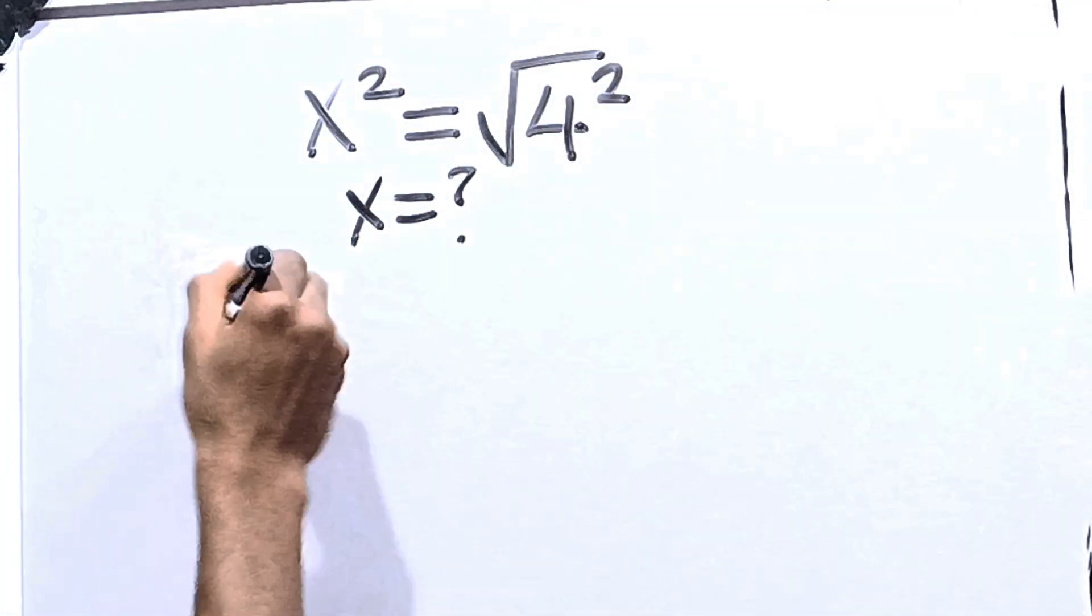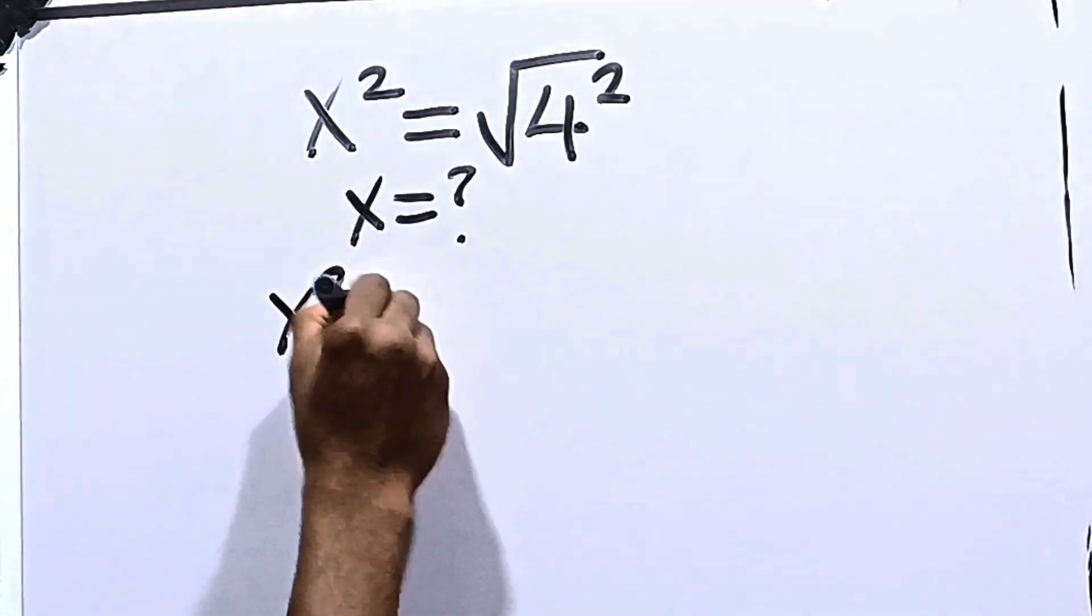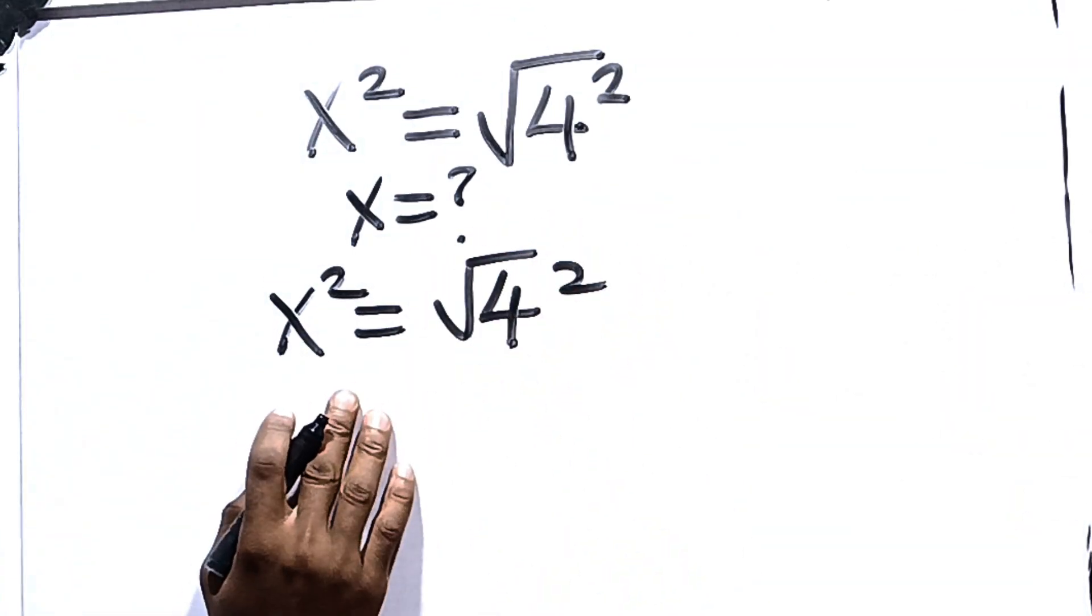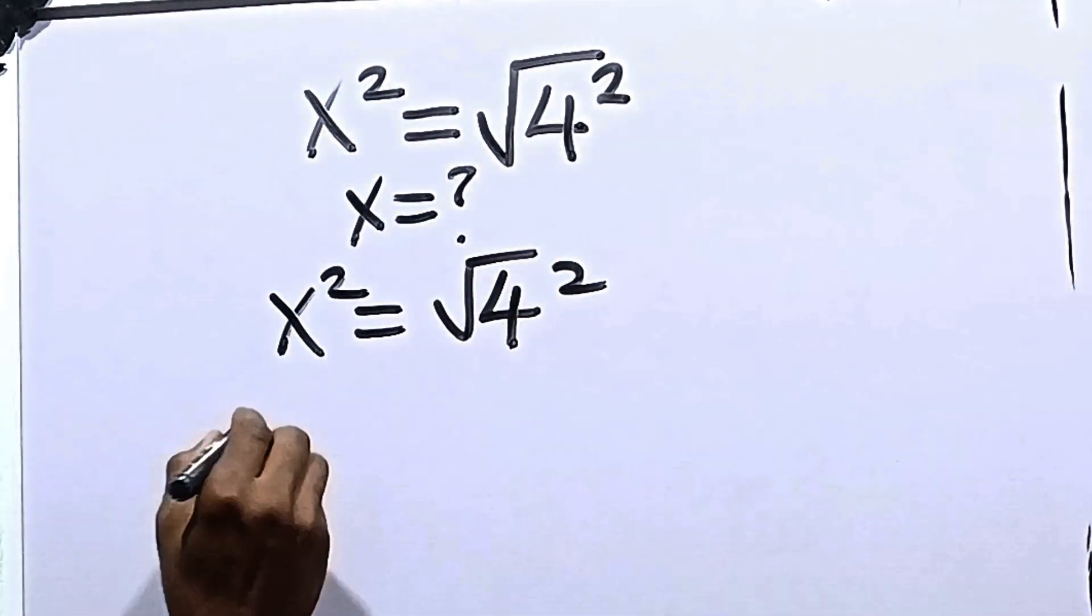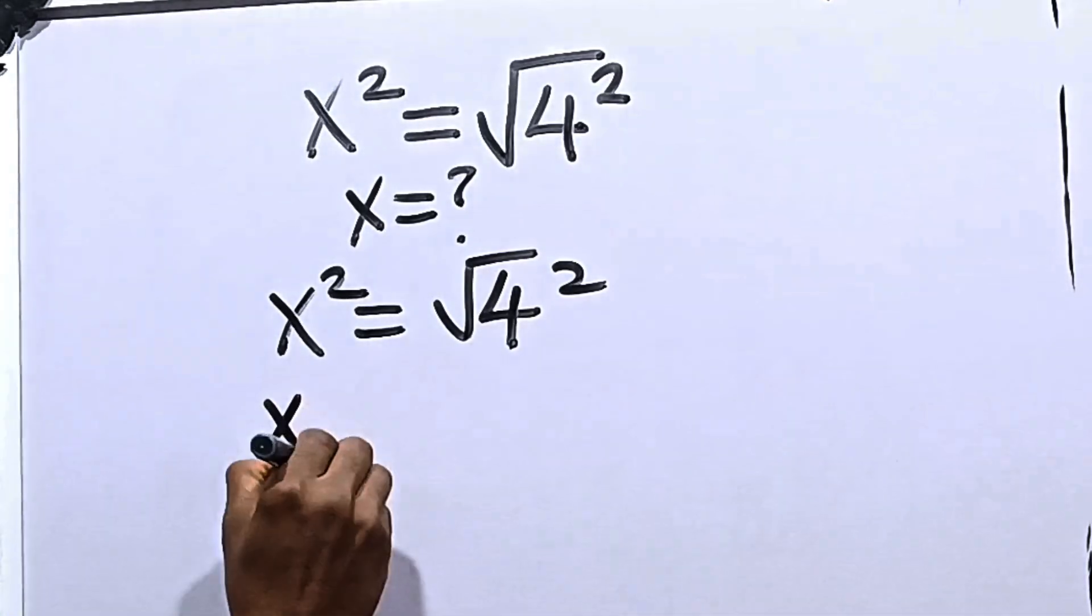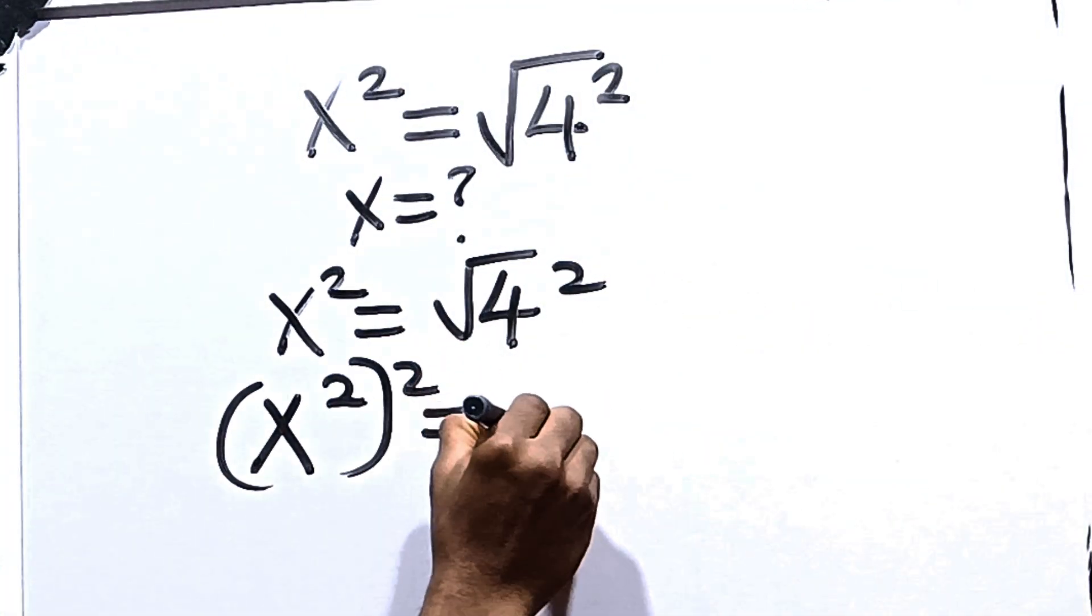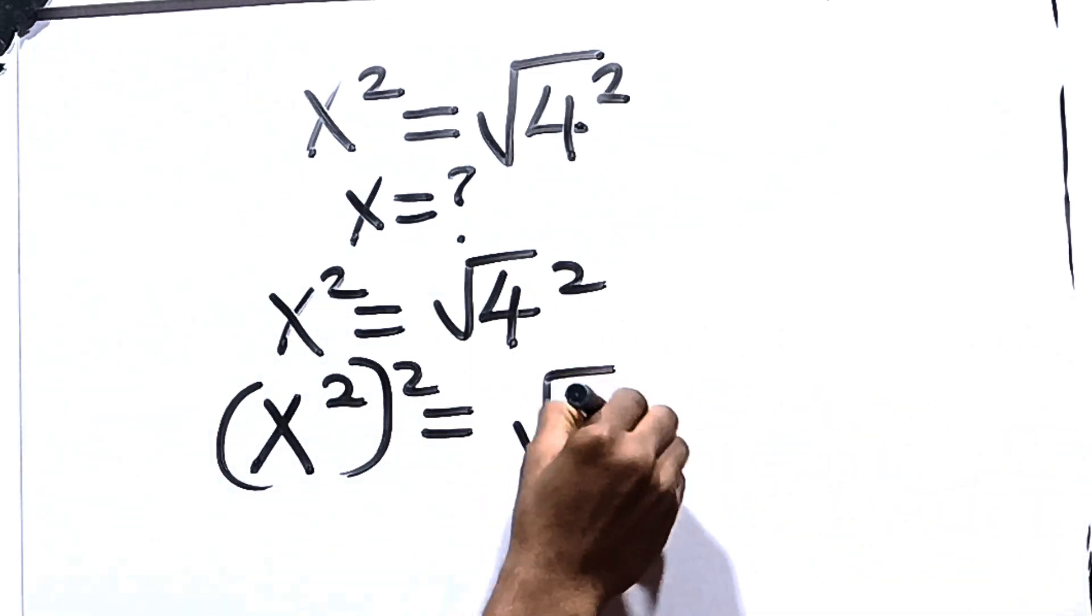First things first, you can say x squared is equal to root of 4 squared. From here, we can say let's square both sides. So if we square both sides, we have that x raised to the power 2 squared is equal to root of 4 squared squared.